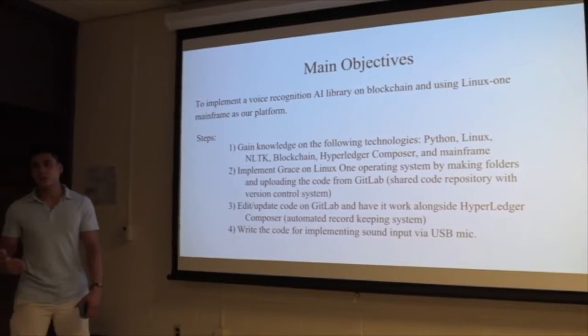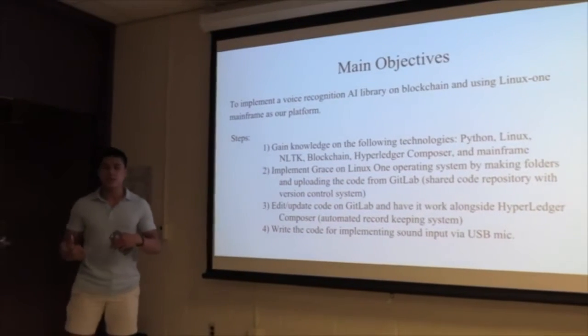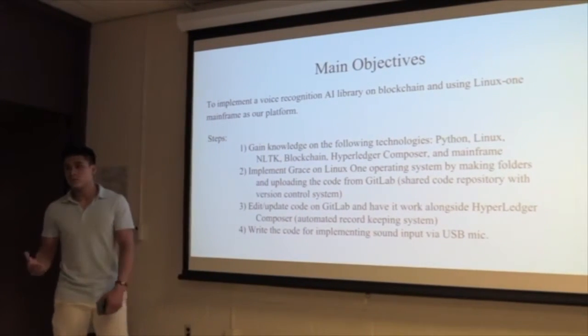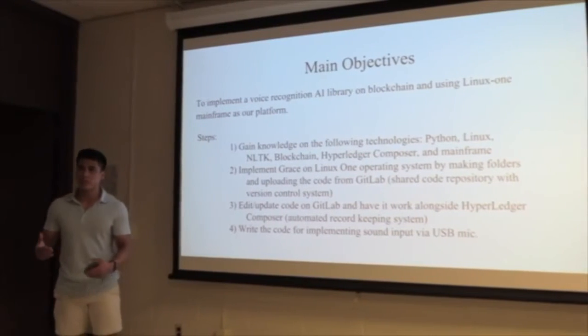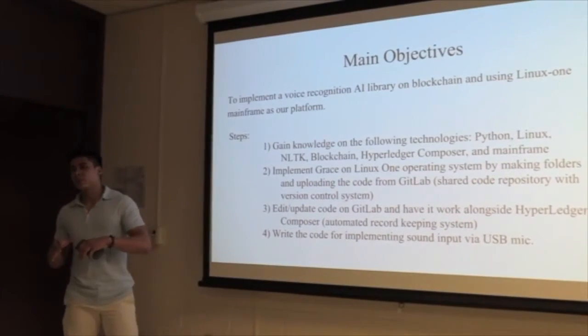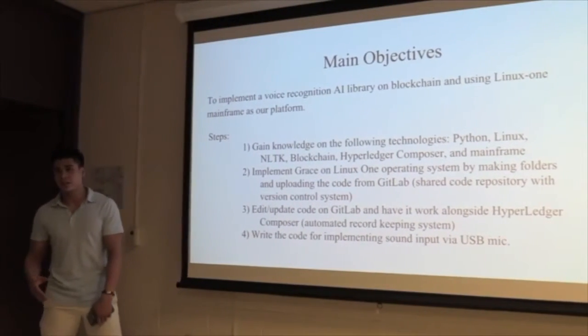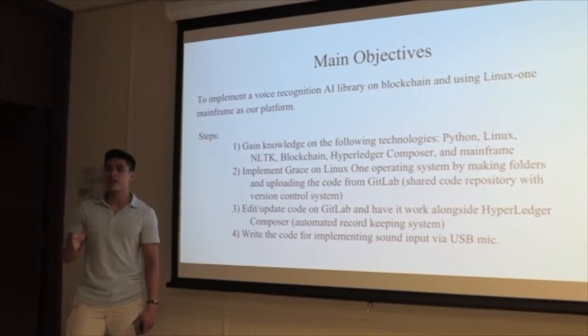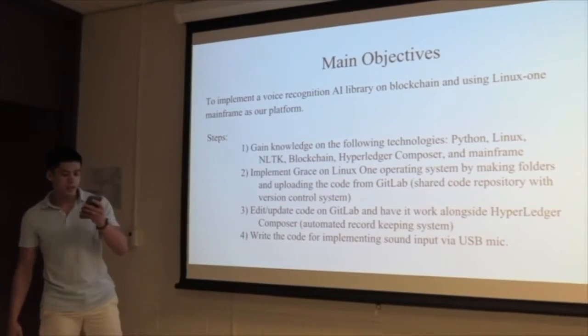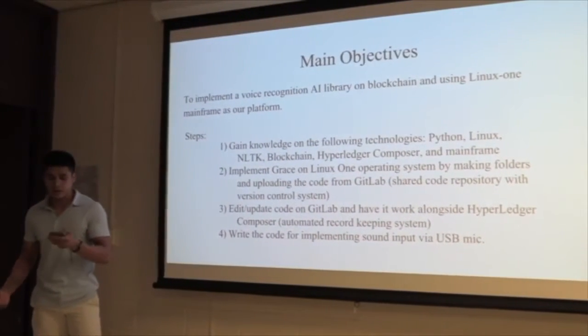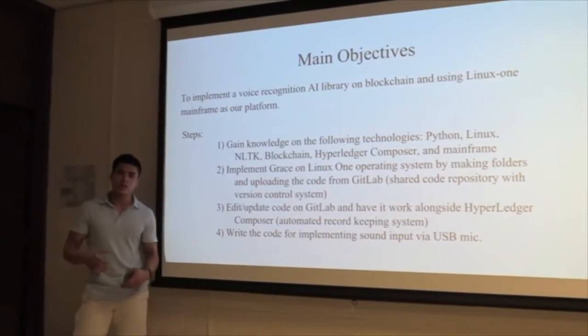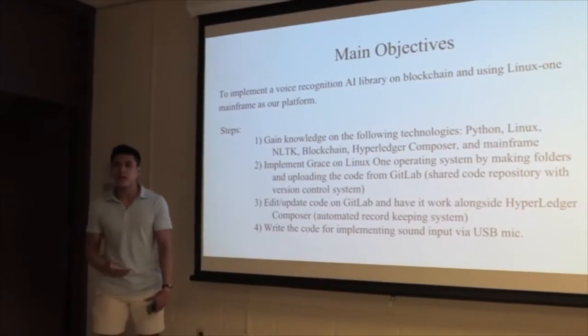NLTK is a natural language toolkit which we extract from online, and it helps us implement the human language into Grace. Blockchain is a technological structure which utilizes the data we put into it and manipulates it in its own way. Hyperledger Composer is like an automatic record-keeping book which stores the information we put. Mainframe is basically a processing unit. It's important because with all the data that we have to use to help this chatbot learn, this is the only way it could process everything within the system.